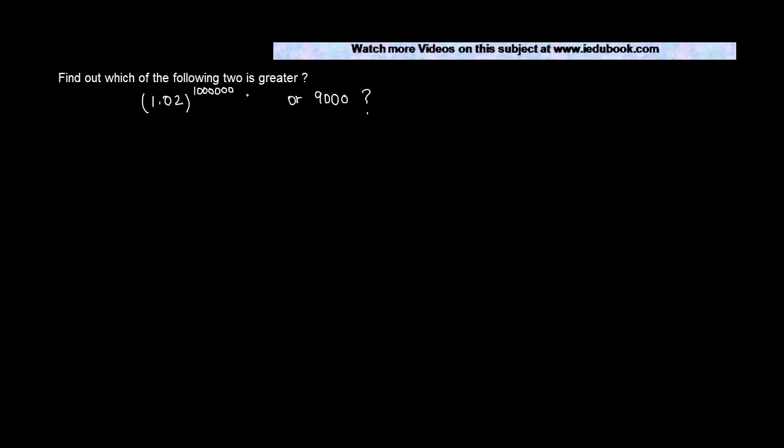Find out which of the following two is greater: 1.02 to the power 1,2,3,4,5,6, so it's effectively a million, or 9,000. Now this is very simple, right? You can't find out this particular number if you start doing it manually.